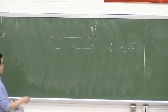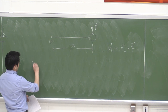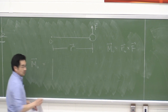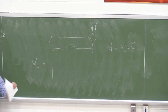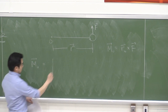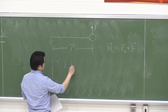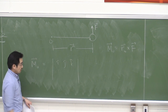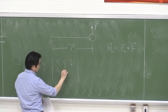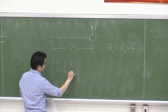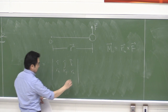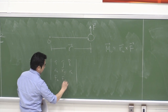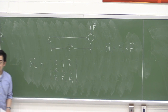Mathematically, you can compute the cross product using a determinant with i, j, k unit vectors in the first row, then r_x, r_y, r_z in the second row, and F_x, F_y, F_z in the third row. Then M_O equals (r_y F_z − r_z F_y) i plus (r_z F_x − r_x F_z) j plus (r_x F_y − r_y F_x) k. That's how you do the math.